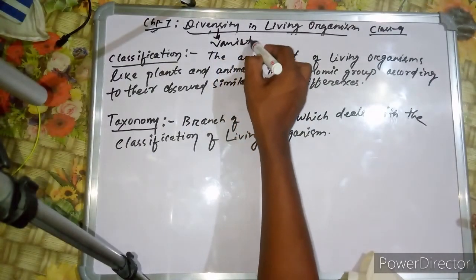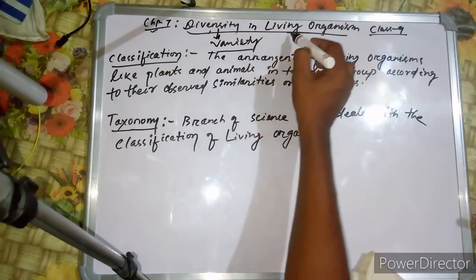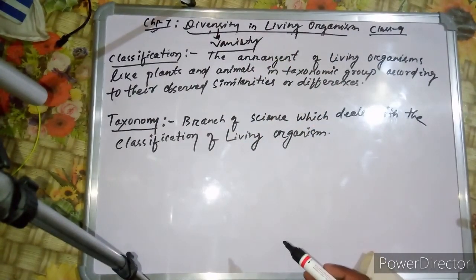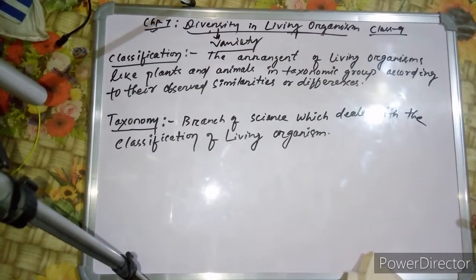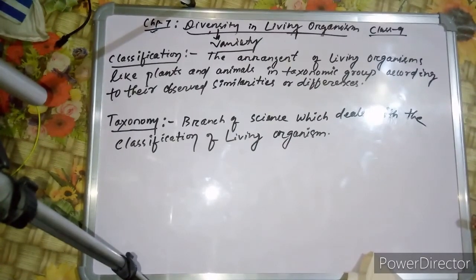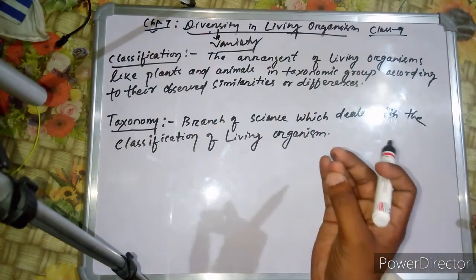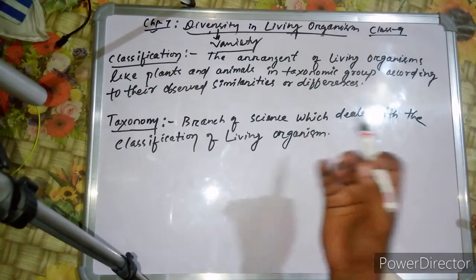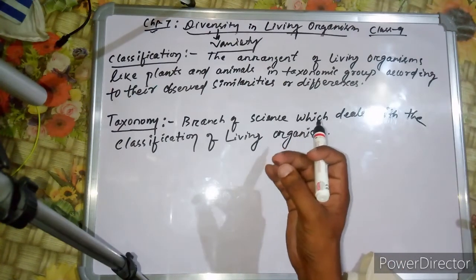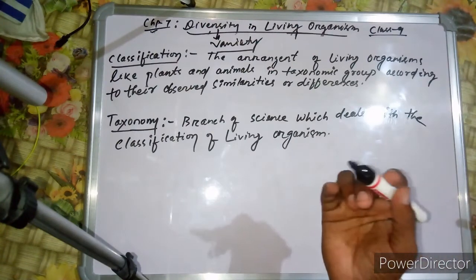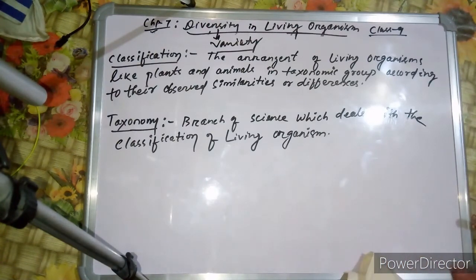Diversity means variety of organisms. We are going to study how many organisms are in our environment. We will study them separately — tiger, rabbit, cat, dog, human beings, bats — different special animals and plants.